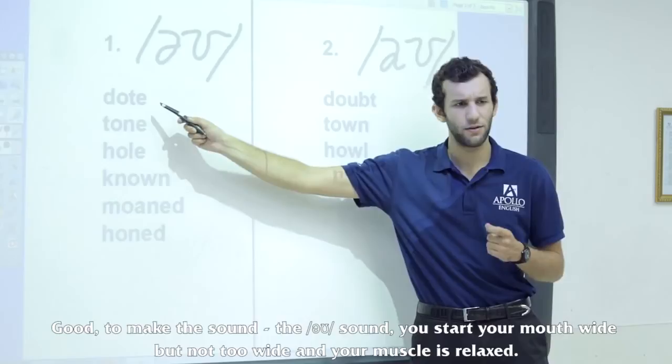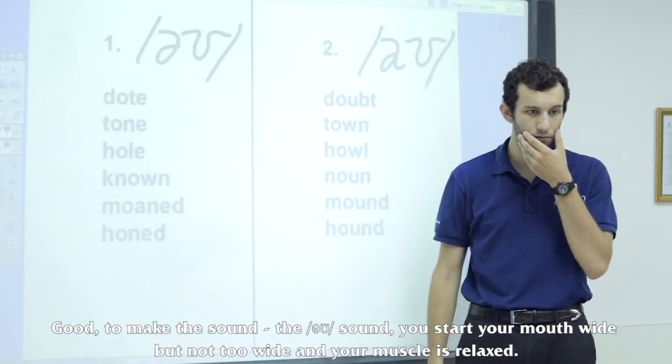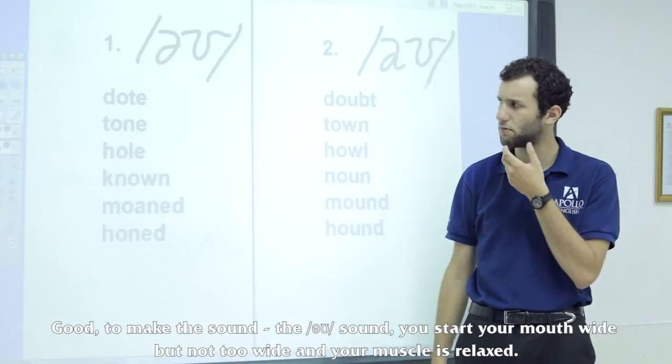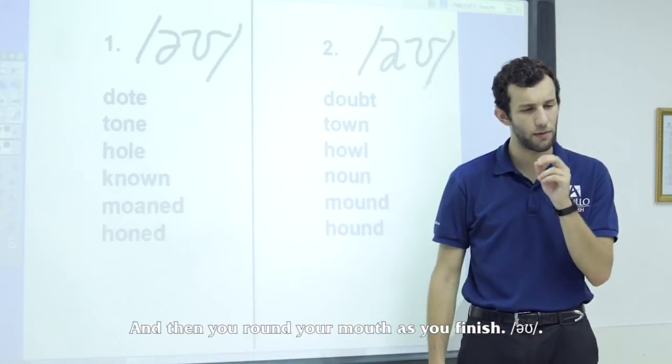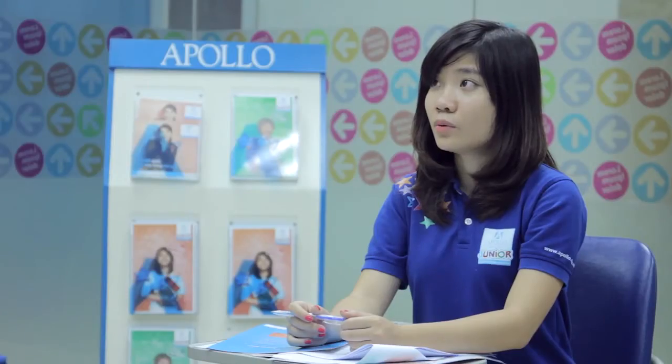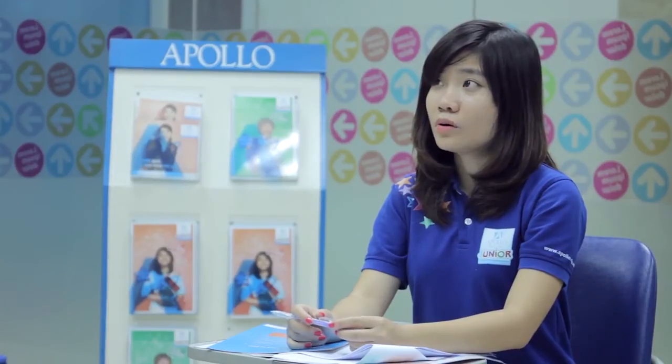To make the sound, the O sound, you start your mouth wide, not too wide, and your muscles are relaxed, and then you round your mouth as you finish. O. O. One more round. O. O. Good.